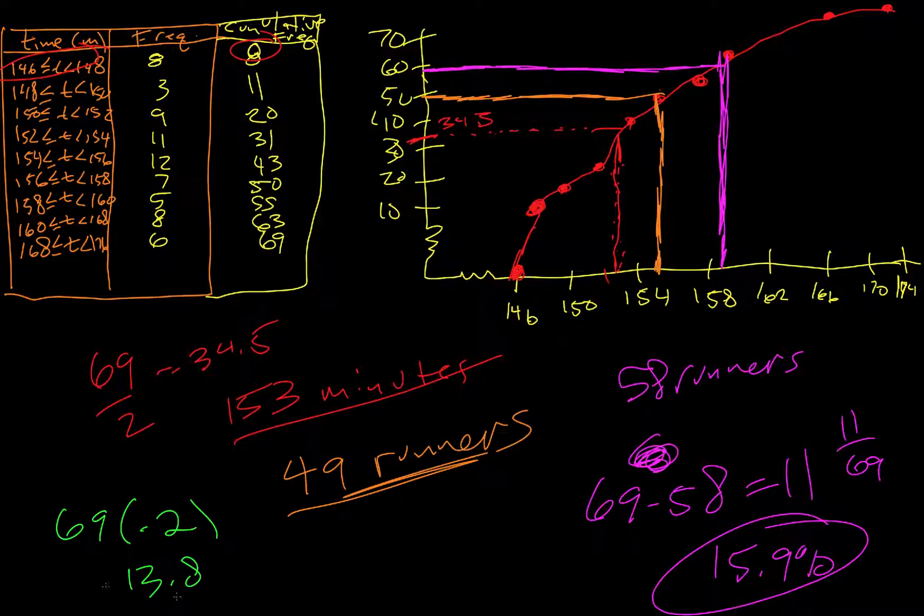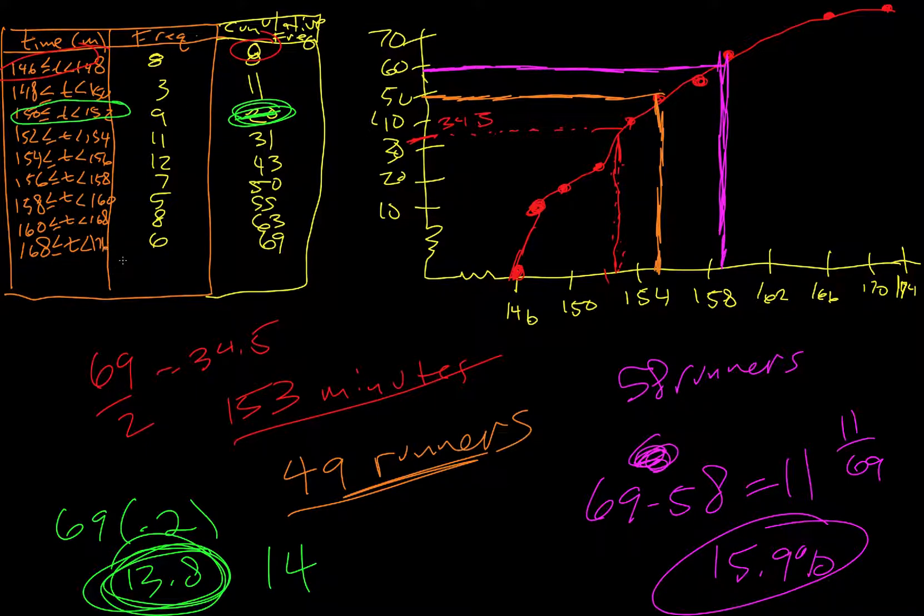And so we want the first... let's see, let's read it one more time. Time taken by a competitor who finished in the top 20%. So to be in the top 20%, so we want to start with like a 14 on the cumulative frequency. And so for right here, we're going to be in this range right here, like where this 20 is. So over here. And the amount that's actually in there is nine, right? Now we're at 11. So we're only using up three of those. So we're only using up two thirds of that nine.